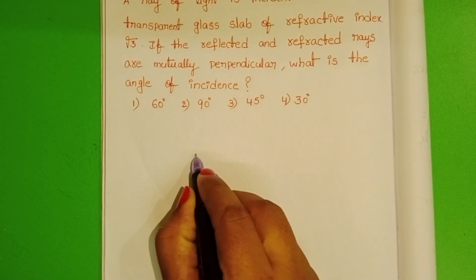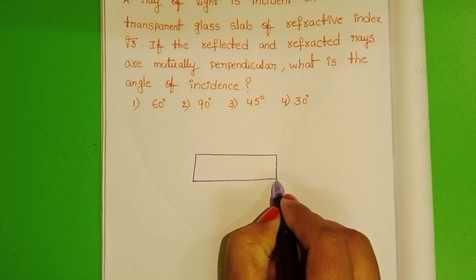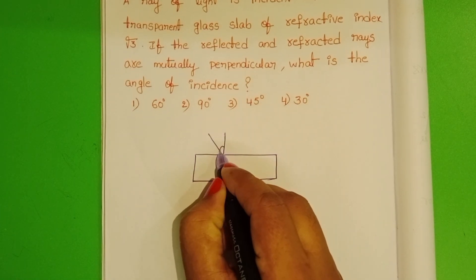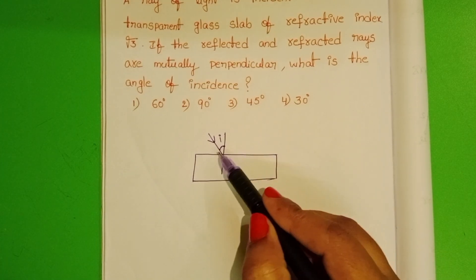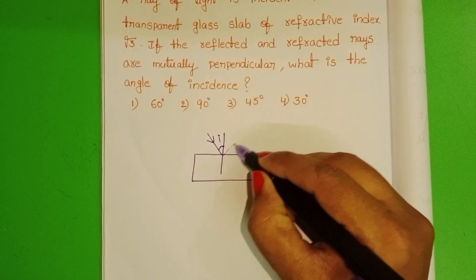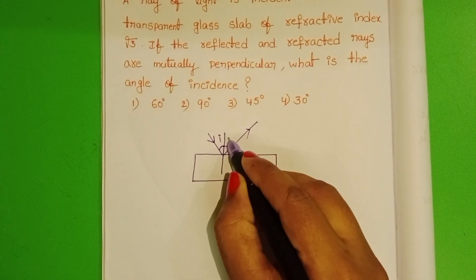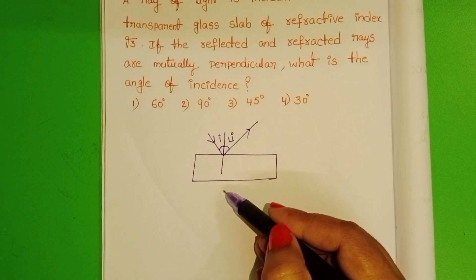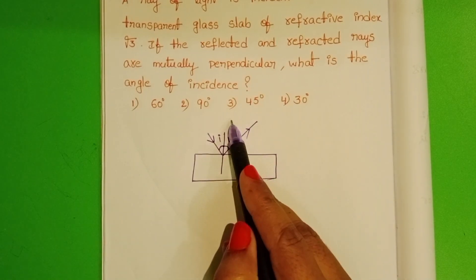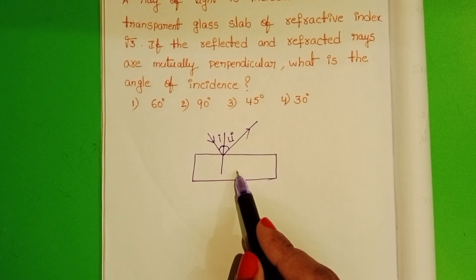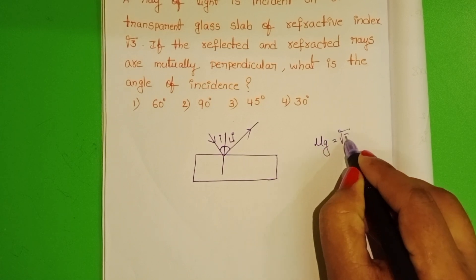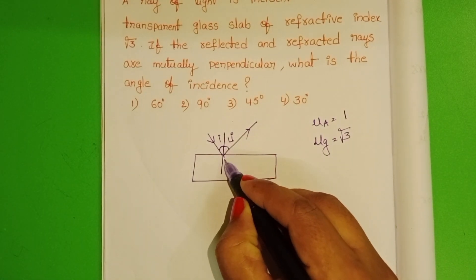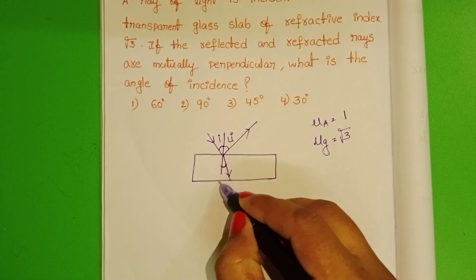In the given question, a light ray is incident on a glass slab. We don't know the angle of incidence — let it be I. We know some part of the light ray is reflected backward, and the angle of reflection also equals I. Some part of the light ray is refracted through the glass slab. This medium is the rarer medium and glass is the denser medium. Refractive index of glass equals √3, and refractive index of air equals 1. The refracted ray bends towards the normal; this is angle of refraction r.